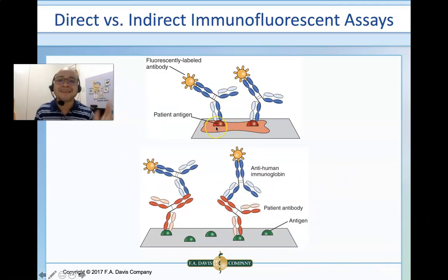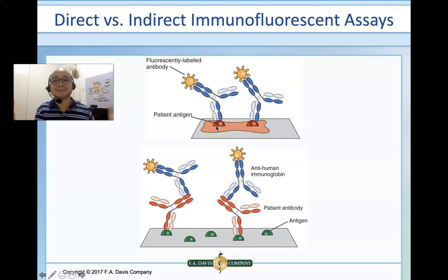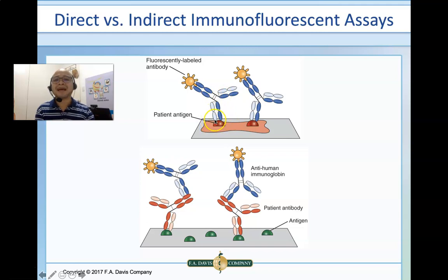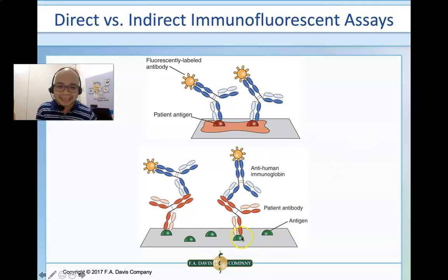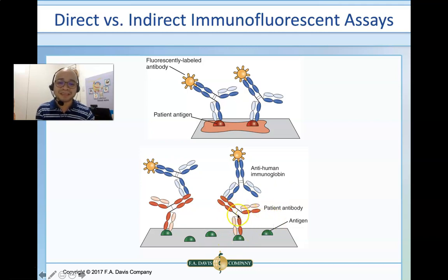An example of direct immunofluorescent assay: if you want to detect streptococcus from a body fluid or throat swab, you add a fluorescent-labeled antibody specific to group A streptococcus with fluorescein isothiocyanate. When you look under the microscope, you see fluorescent microorganisms. In indirect immunofluorescent assay, the known antigen is attached to the solid phase — the slide — patient serum is added, and if positive, a fluorescent-labeled anti-human immunoglobulin is added to bind at the FC portion of the patient's antibodies.